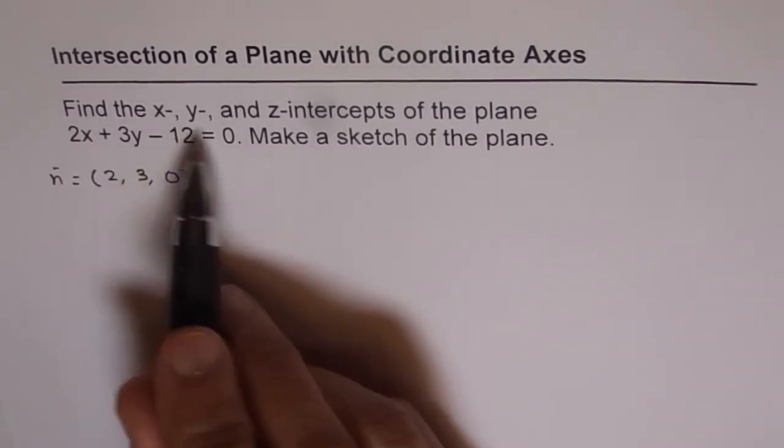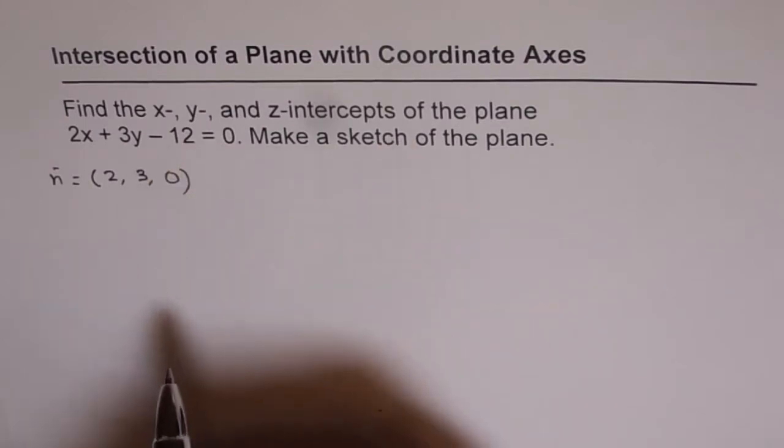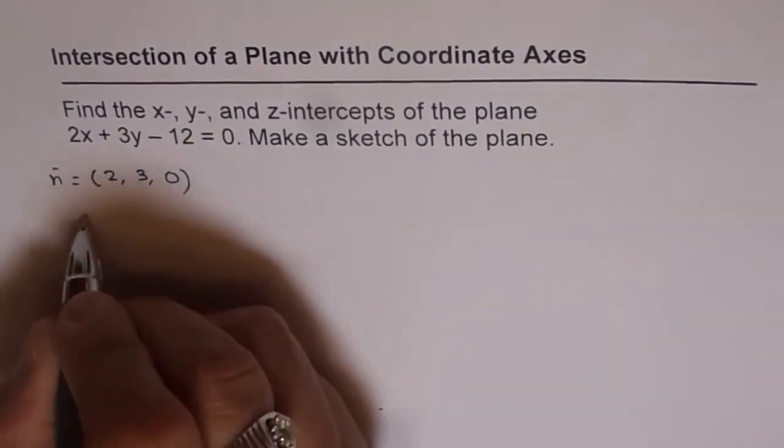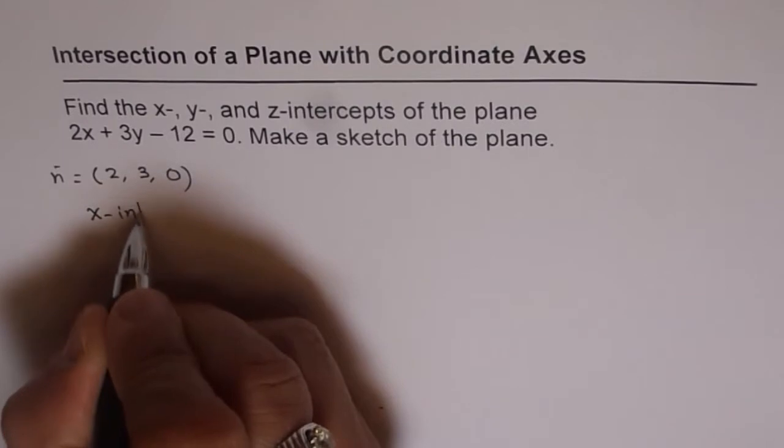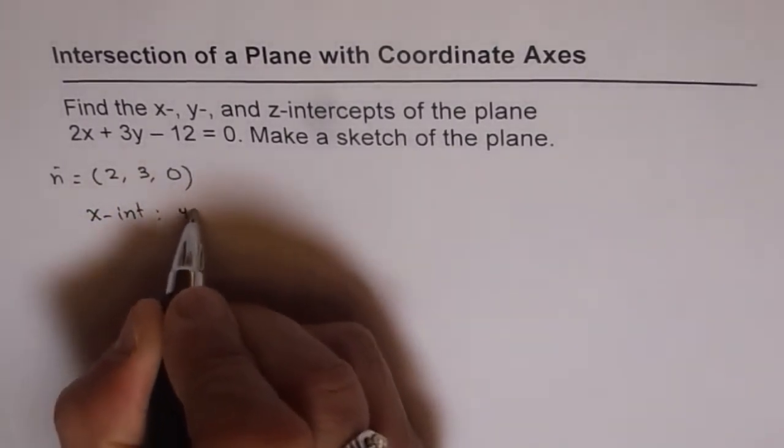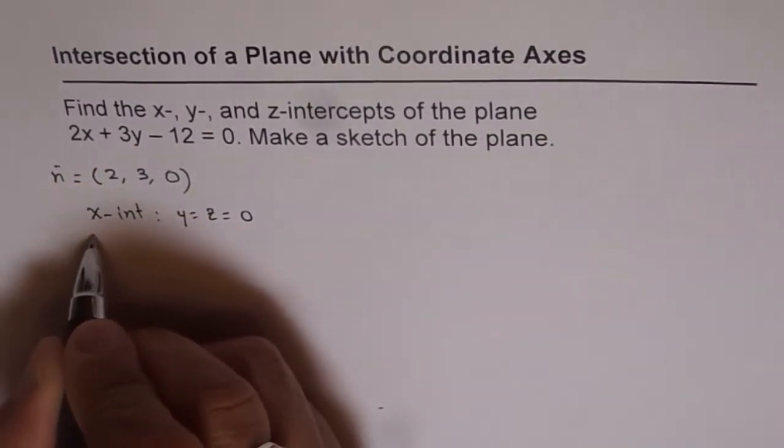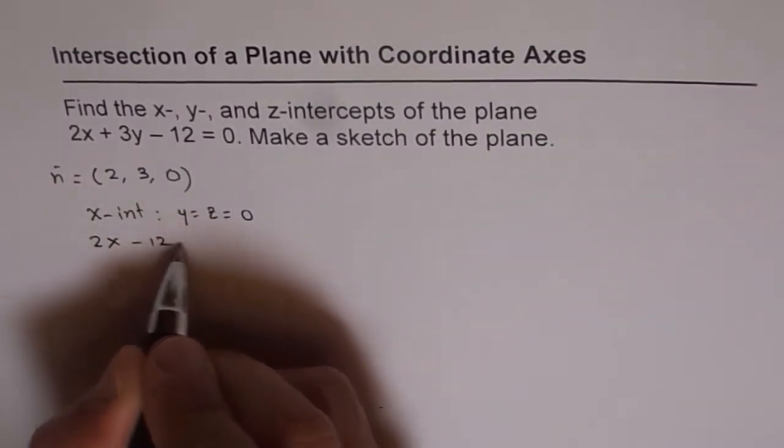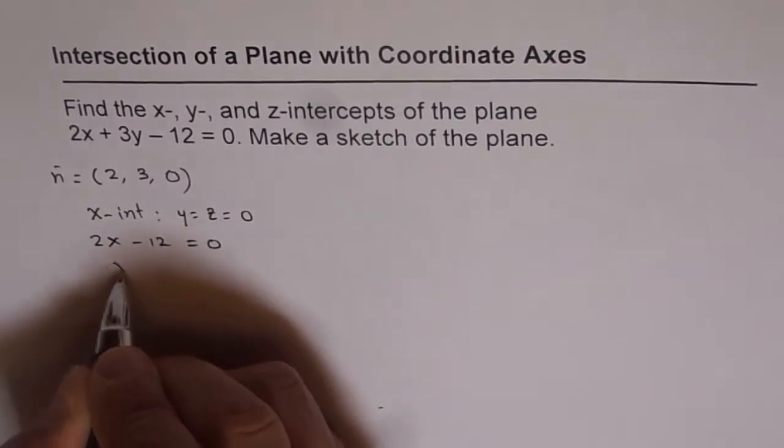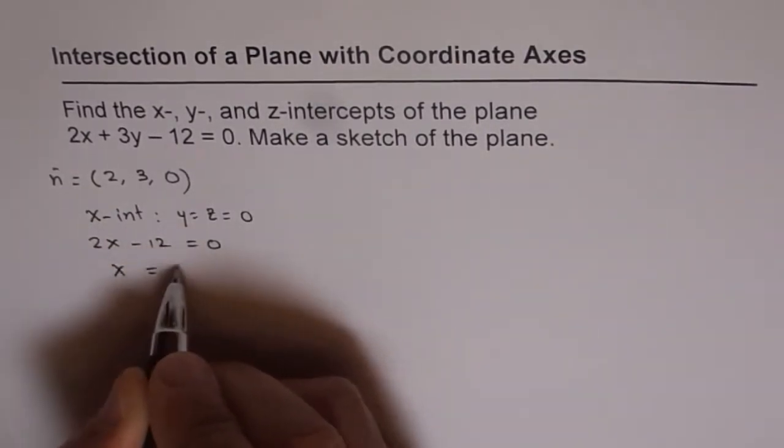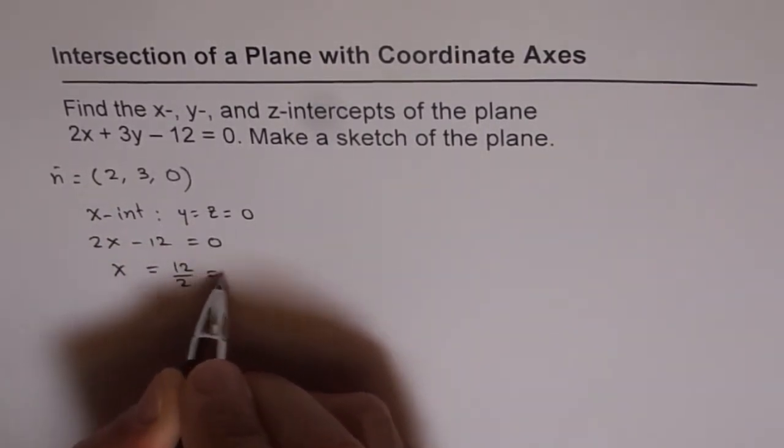Let's try to find out x, y, and z intercepts for this plane. Now for the x-intercept, y equals z equals 0. If I put y equals 0, then I get 2x minus 12 equals 0, or x equals 12 over 2, which is 6.